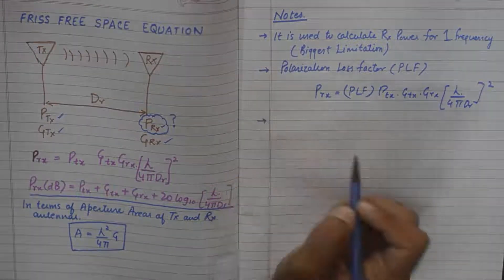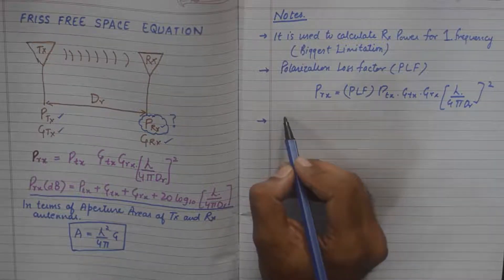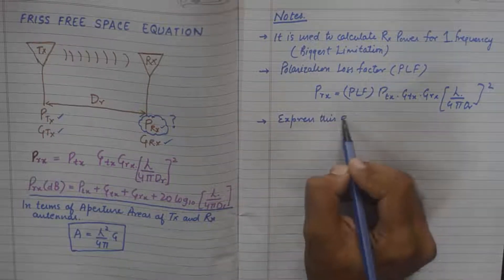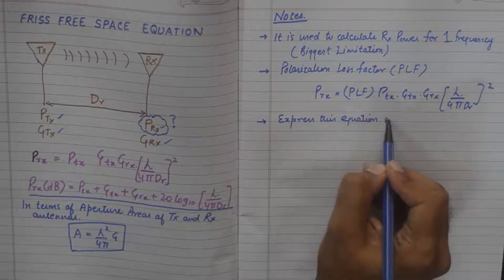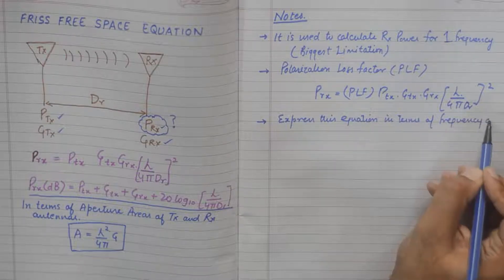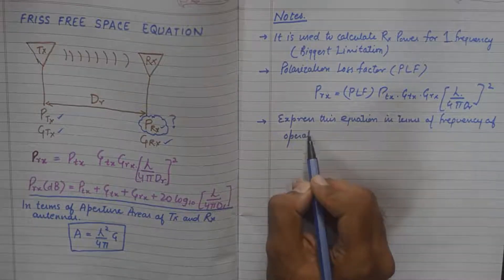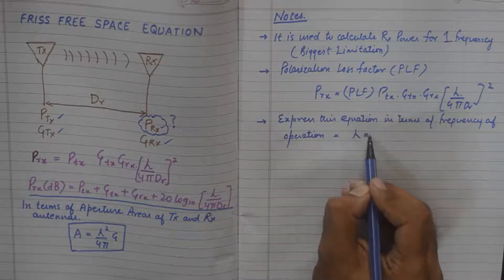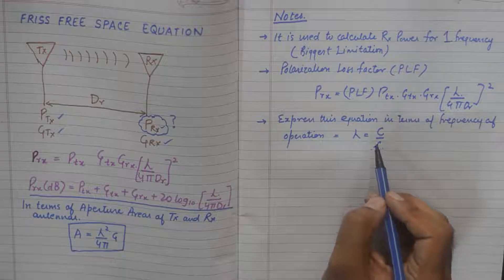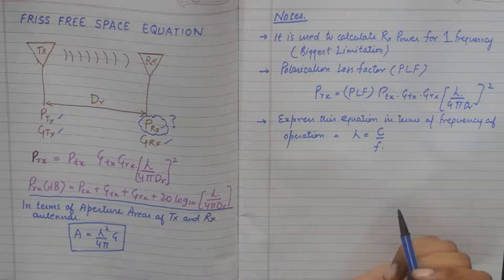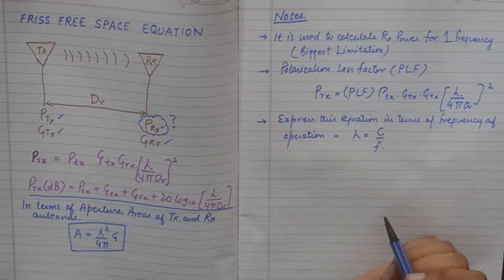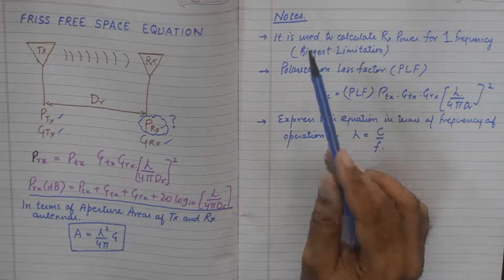And the third note is, if you want to express this equation in terms of frequency of operation, you could simply use lambda equals C by F and substitute C by F in the Friss Free Space Equation. So whatever form the numerical may take, you shall be able to solve this by taking into account these notes.